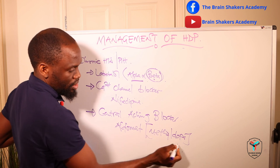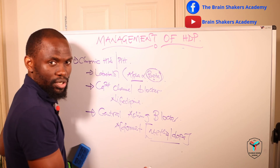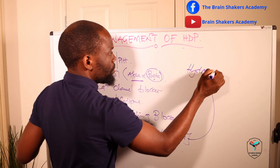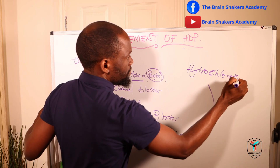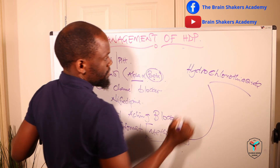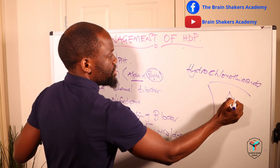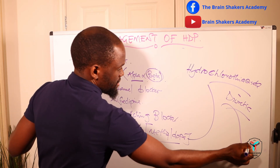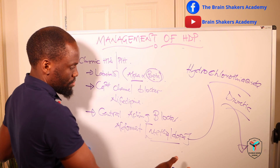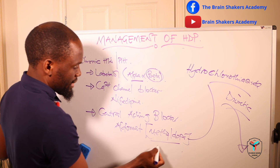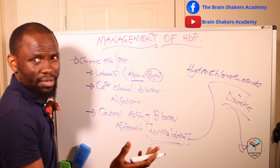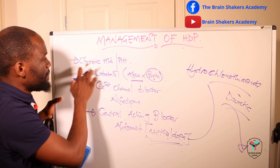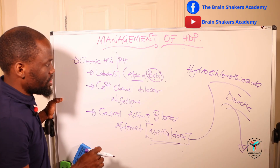Methyldopa can be used on its own or in combination with hydrochlorothiazide, which is a diuretic. By allowing the exit of fluid, hydrochlorothiazide helps control blood pressure. The active ingredient methyldopa comes in presentations of about 250 or 500 milligrams. These are the drugs you can select for the management of chronic hypertension and pregnancy-induced hypertension.